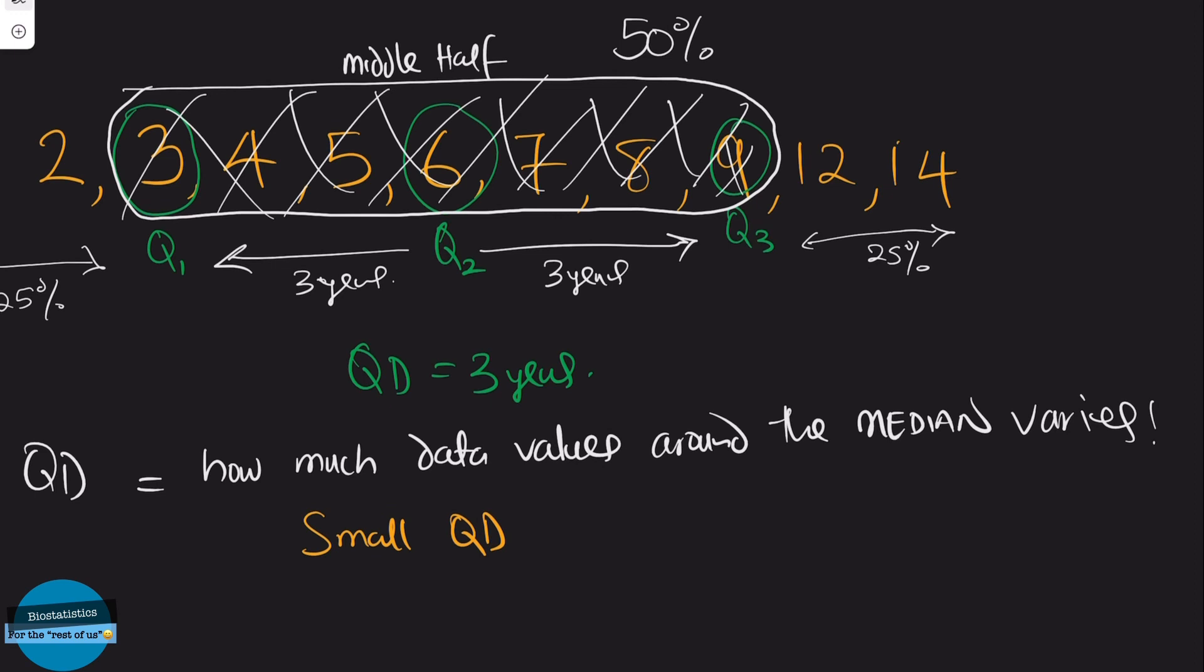A small quartile deviation means that most of the data values are close to the median. And a large quartile deviation means that most of the data values are far away from the median.